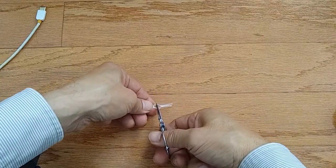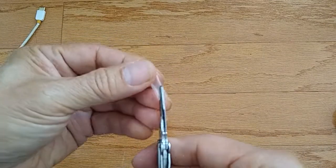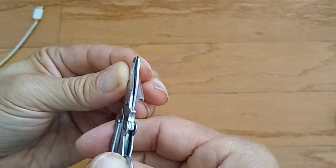Cut two pieces of the straw. One will be about one inch and the other will be about a half an inch. The straw is cut in a spiral pattern.